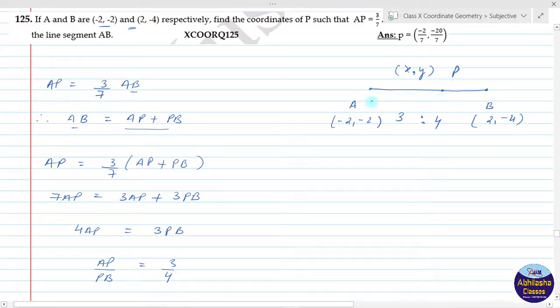Now we know the coordinates of A and B, and we also know that point P divides AB in the ratio 3:4. So we can simply apply the section formula to find the coordinates of P.